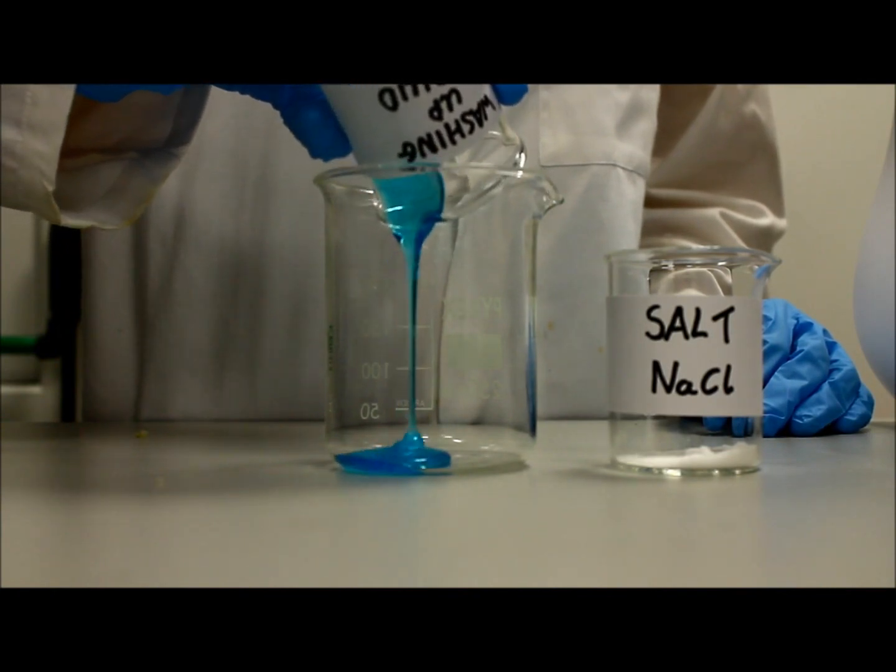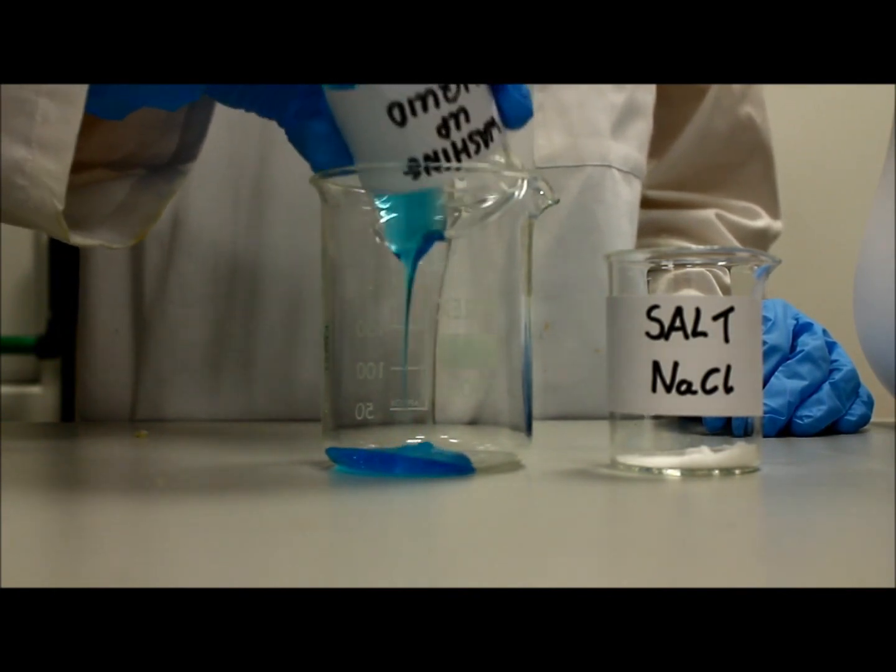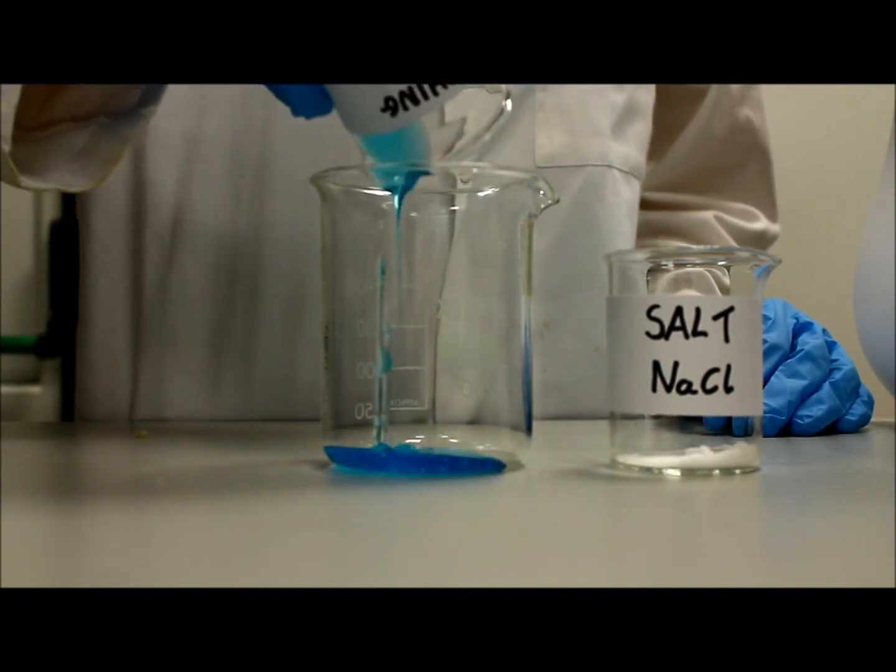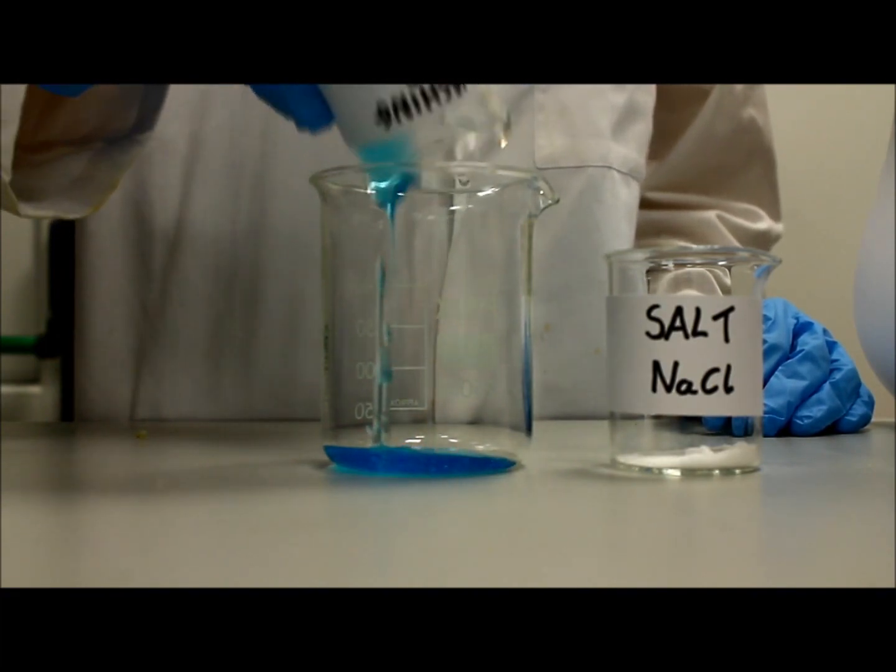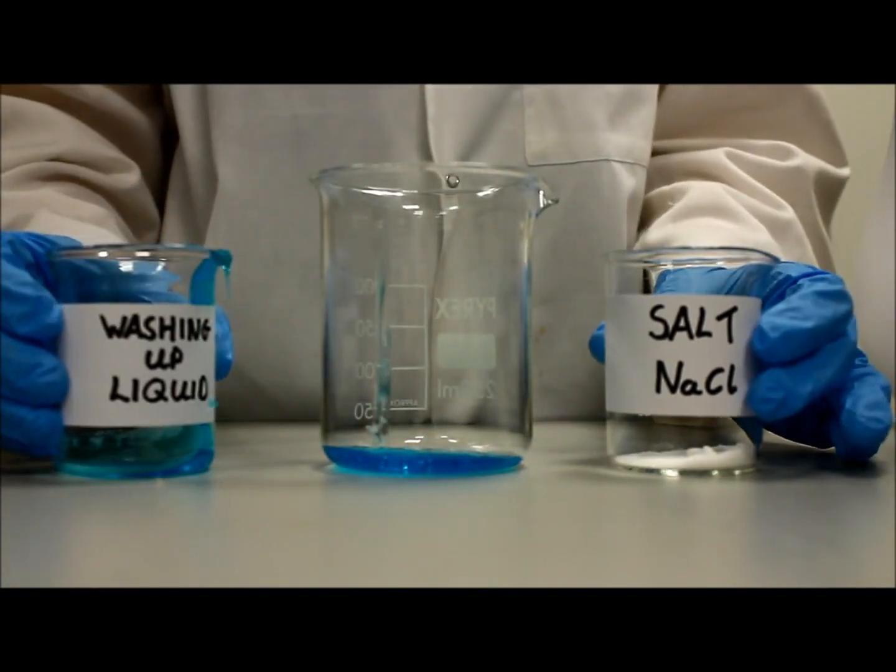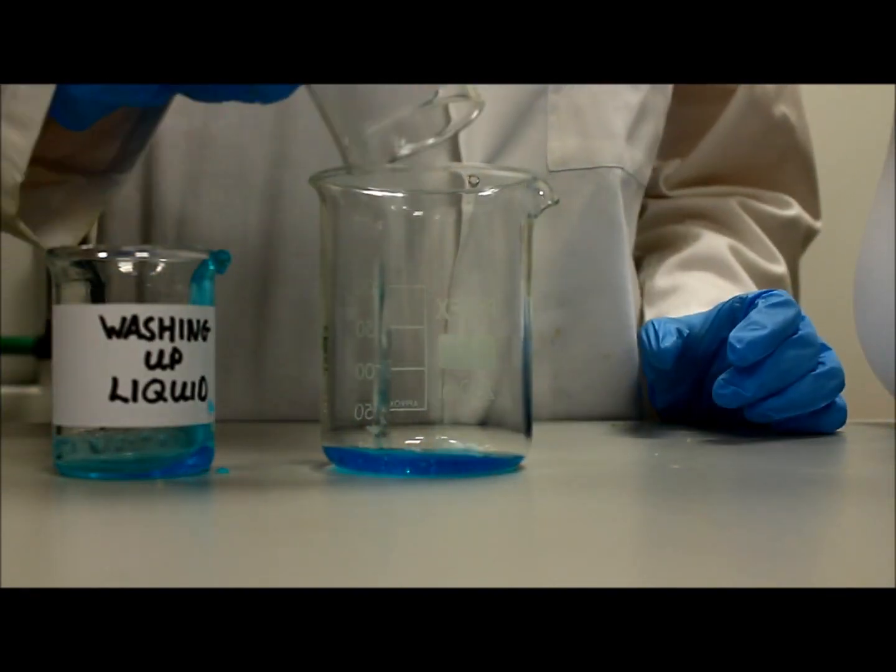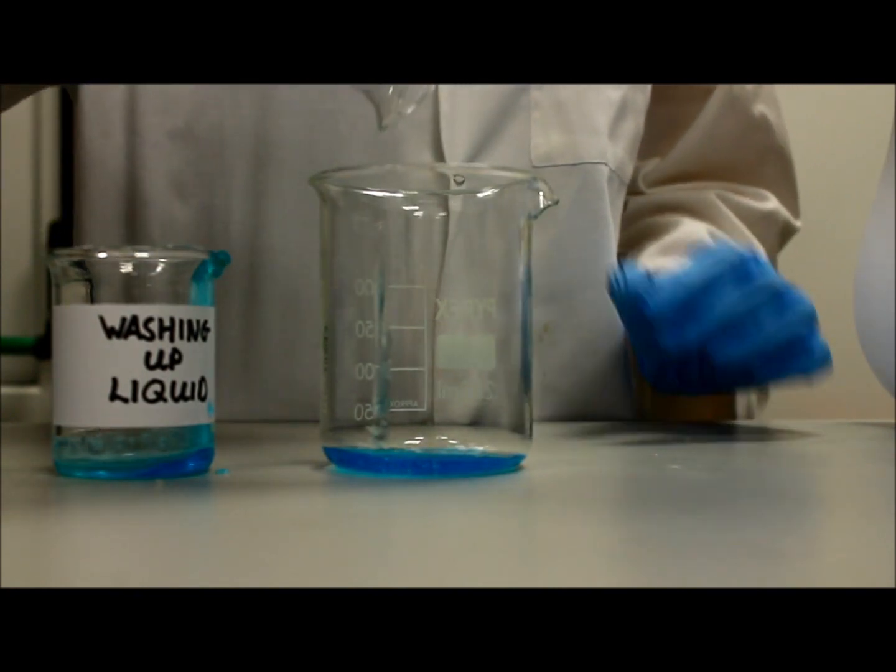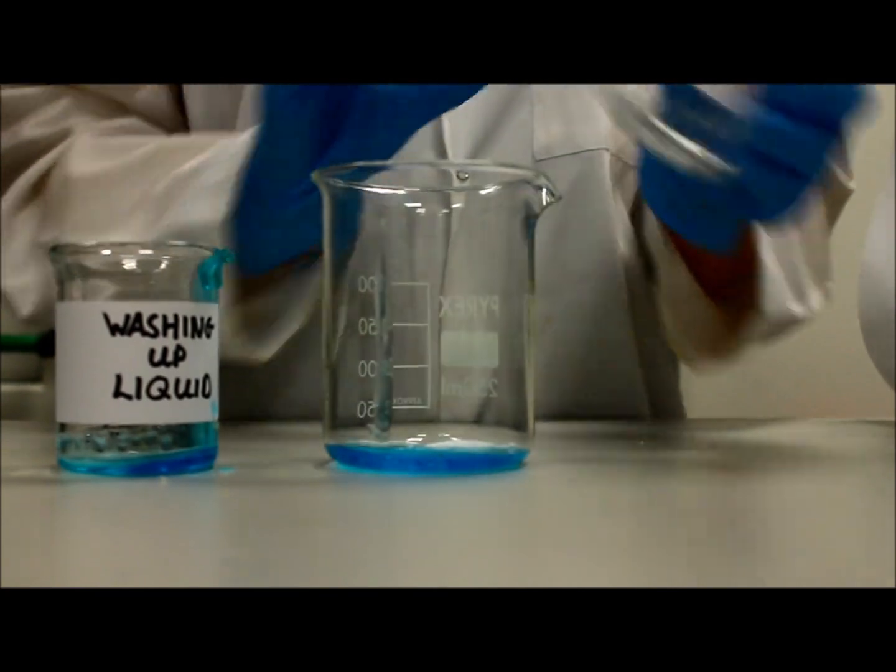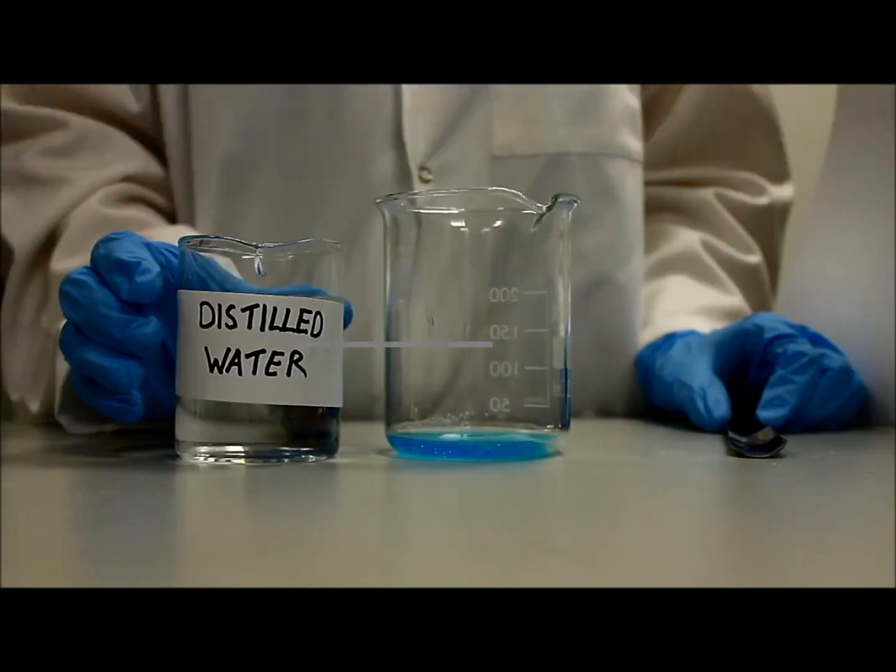You then prepare a mixture of washing up liquid to break down the cell membranes. Salt is added to this in order to cause the DNA molecules to clump together. This separates the DNA from the protein.